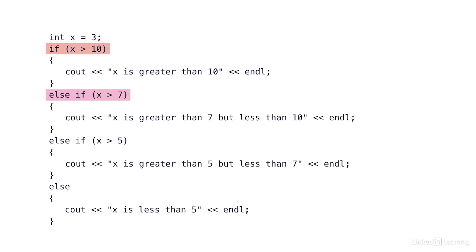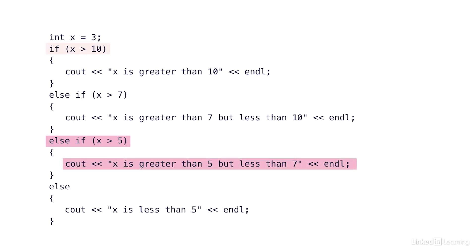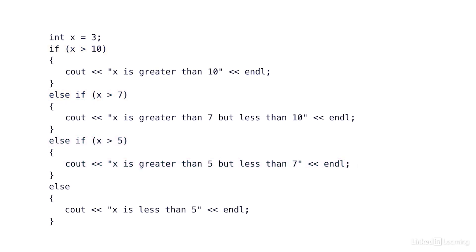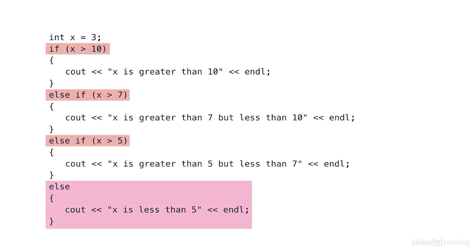If I get to the third condition, that means I can safely say x is greater than 5 but less than 7, because it's not greater than 10 and it's not greater than 7, but it is greater than 5. So if this condition holds true, it will print x is greater than 5 but less than 7. If none of these conditions are true, the else will be the catch-all and it will print x is less than 5.